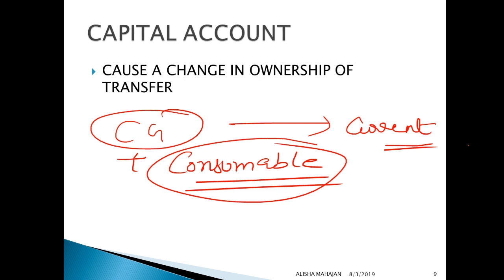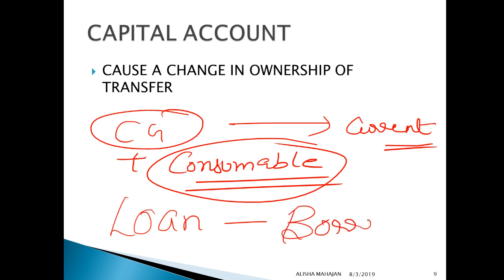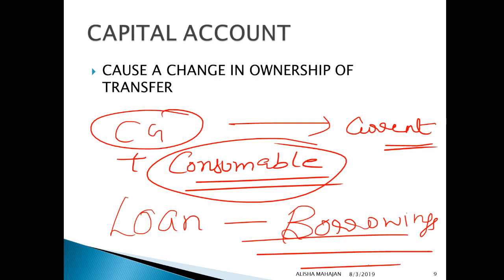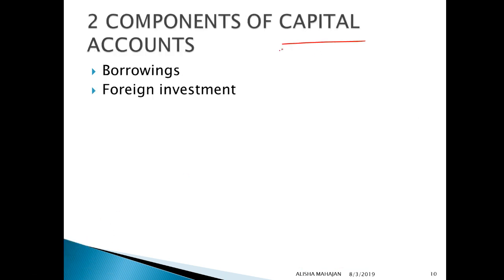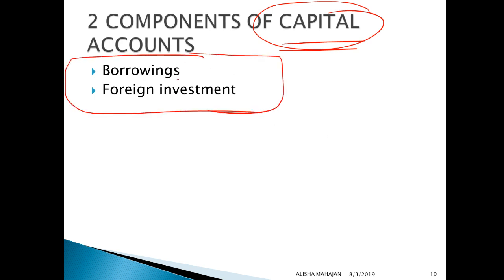Capital account sirf unhi cheezoin ko record karta hai jisse ownership of assets change hoti hai. Wo kaise change hogi? Jaise loan le liya, borrowings — in sab cheezoin se hamara capital account aata hai. Ab samjhenge inke components ko. Jab bhi capital account aayega, plant machinery yeh sab nahi aayega. Ownership change ho rahi hai to part hoga: borrowings aur foreign investment.